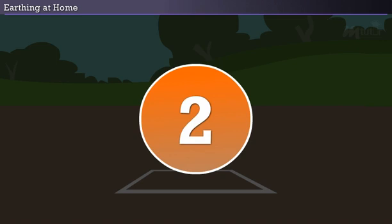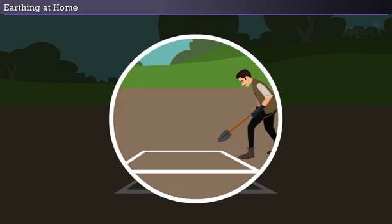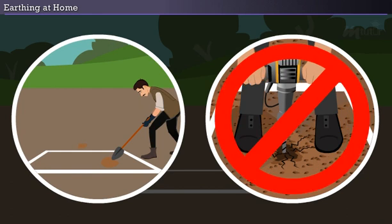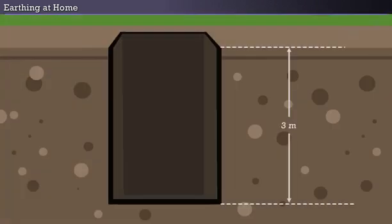Step 2: If the place is soft, use a shovel to dig the pit. But if it is rocky, use a land driller. But it is better to avoid rocky places. Dig the earth for up to 3 meters depth and its length and breadth of 1.5 meters each.